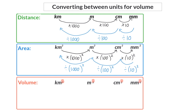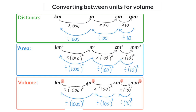To convert from kilometers cubed to meters cubed, we take the original thousand and repeat it three times, so we multiply by nine zeros. To convert from meters cubed to centimeters cubed, we take the original value of a hundred and repeat it three times, multiplying by six zeros, or a million. Lastly, changing from centimeters cubed to millimeters cubed, we repeat the ten three times, so multiply by a thousand. You use the same values, but divide when you move in the opposite direction.